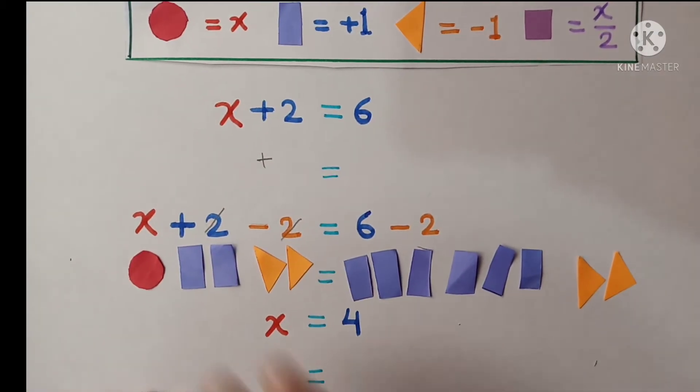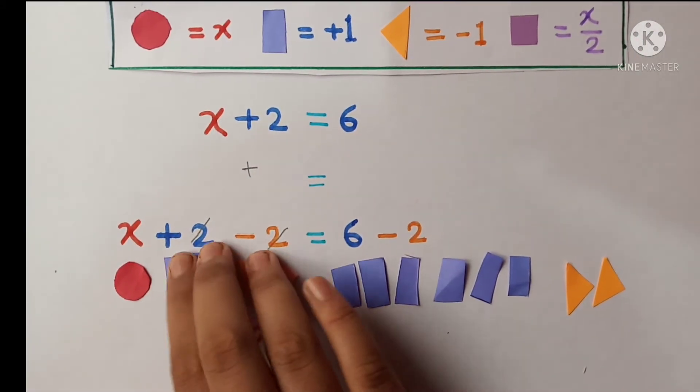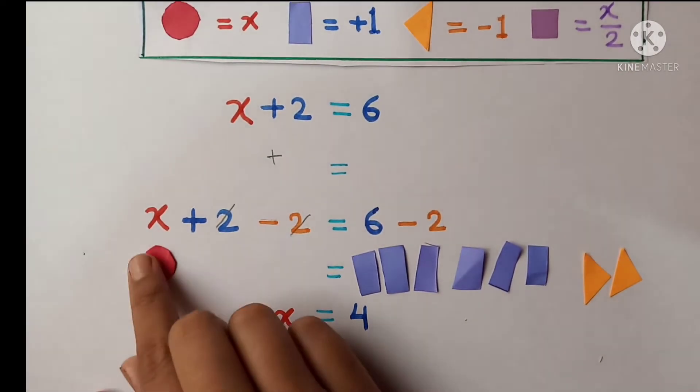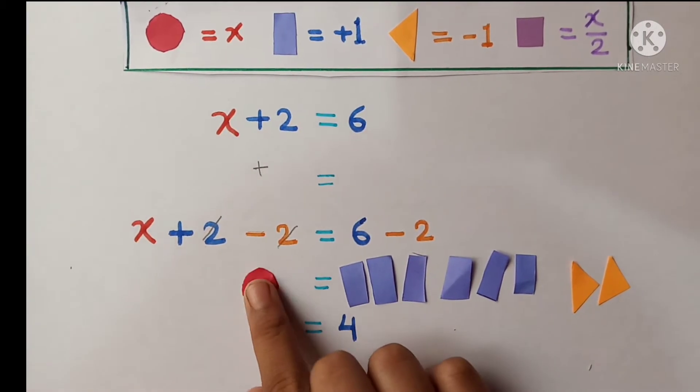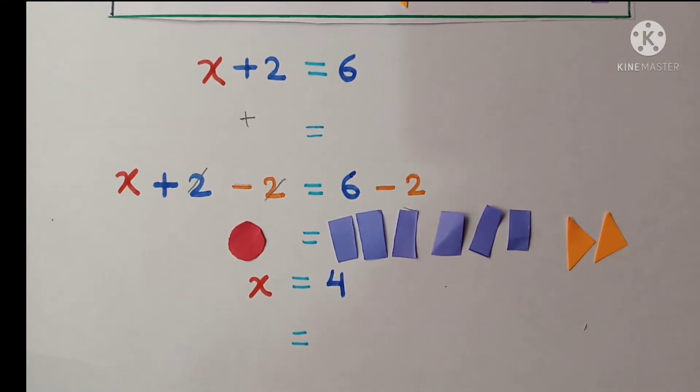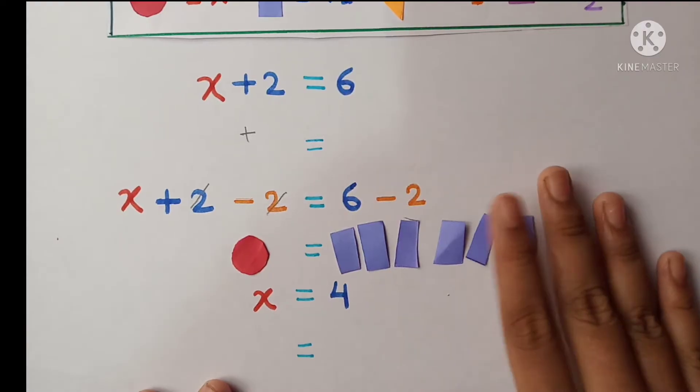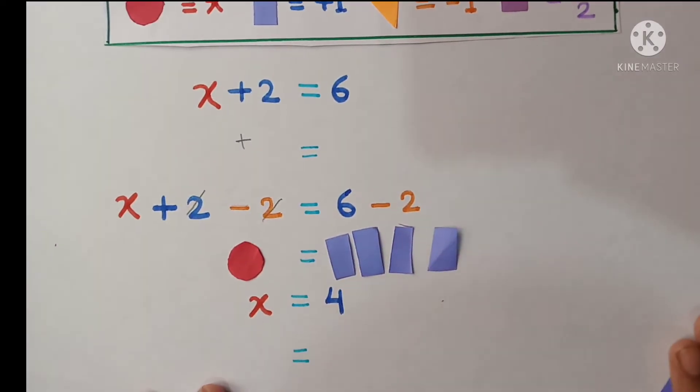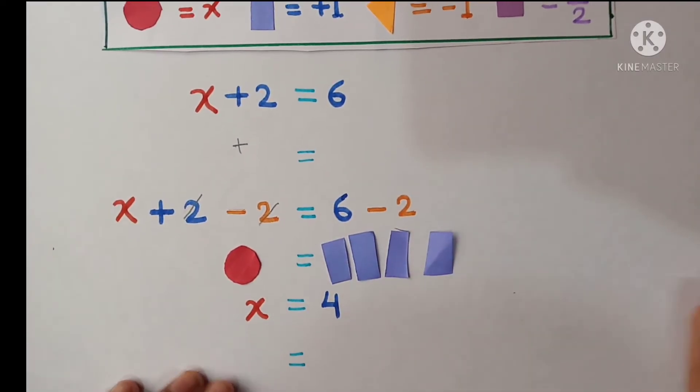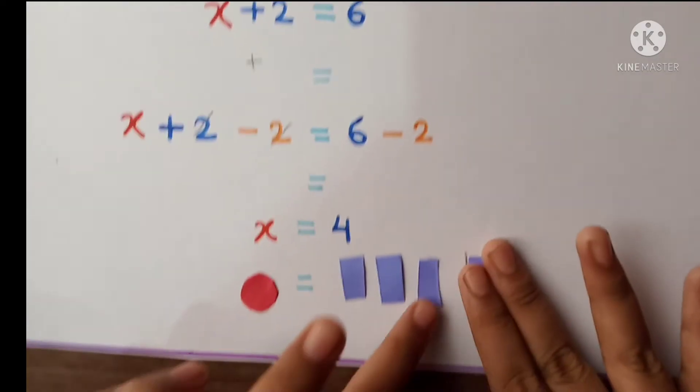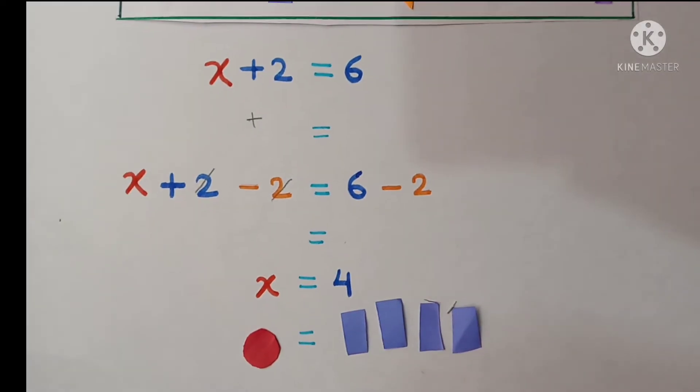Here plus 2 and minus 2 will be cut and it becomes 0. So let's take it here and at this side, here remains x. 6 minus 2 is equal to 4, then all things will be removed and here will be 4 as it is. And then it equals x is equal to 4. So our first equation is solved.